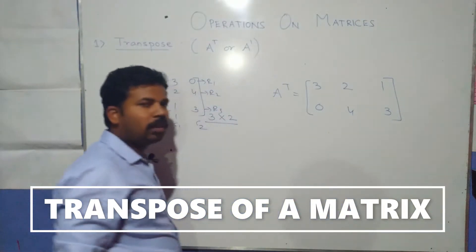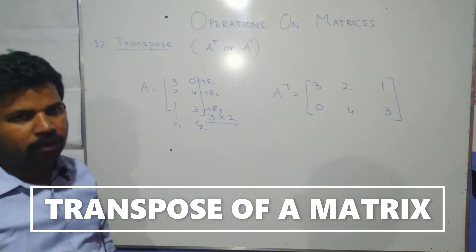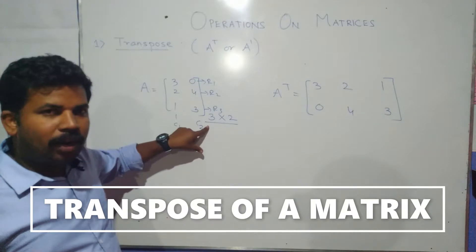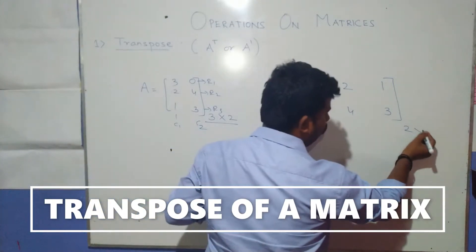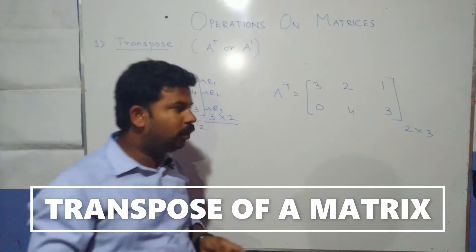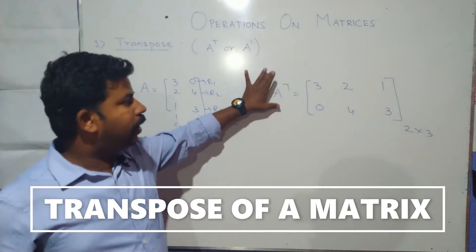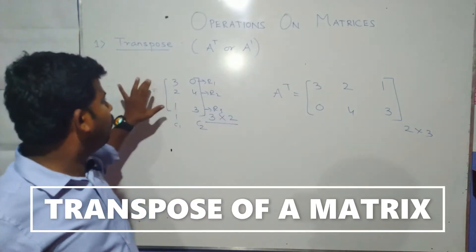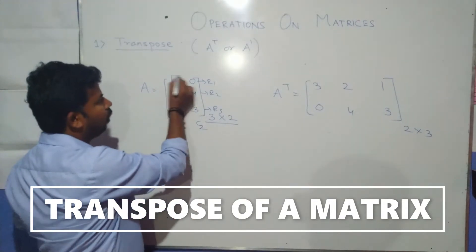This is the transpose of the matrix. Here you can see the order of the original matrix was three by two. After transpose, the order of the matrix is two by three. So transpose of the matrix is obtained by interchanging rows into columns.